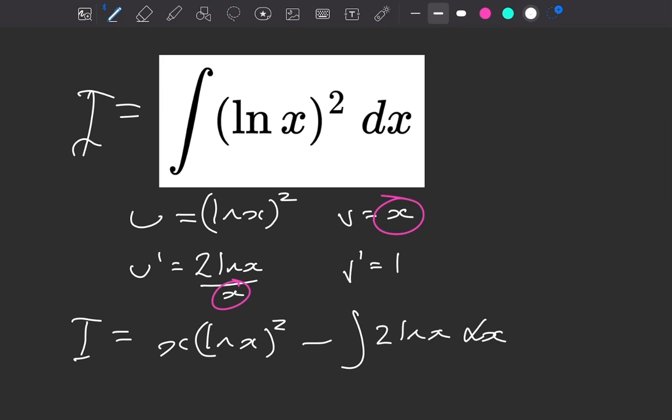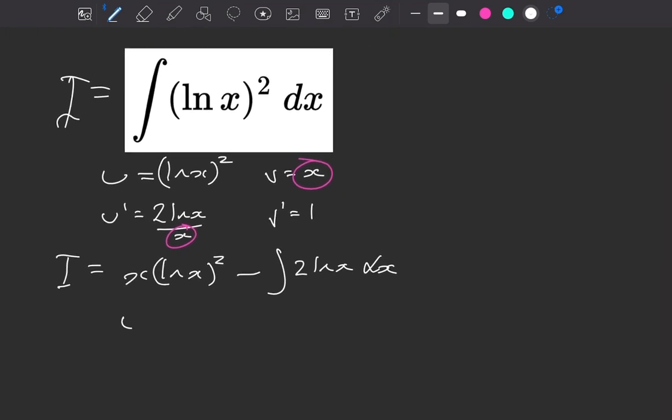To integrate that thing then, we'll again do integration by parts, using the same sort of situation where the thing to differentiate is the natural log of x, and that will give us 1 over x. And the thing to integrate in this case will be 2, so we'll get 2x.